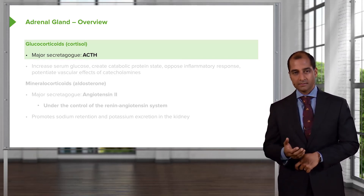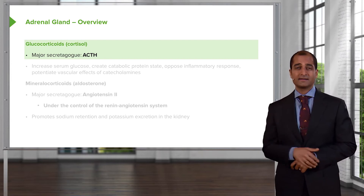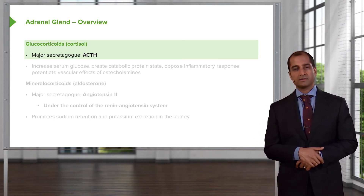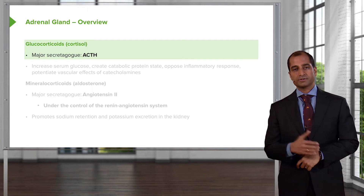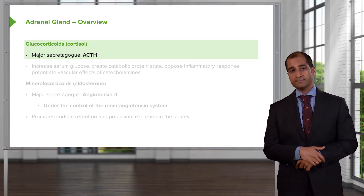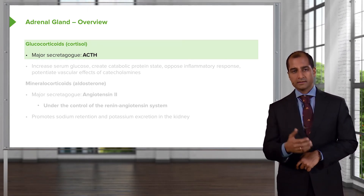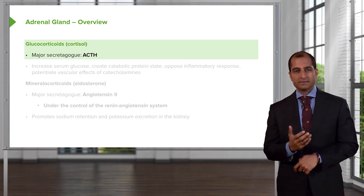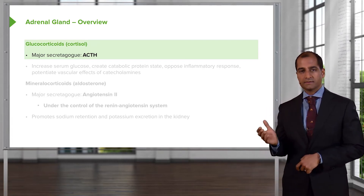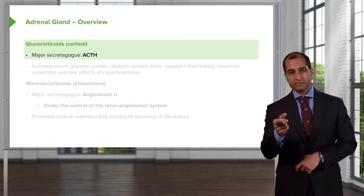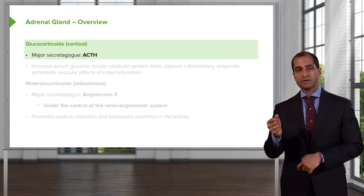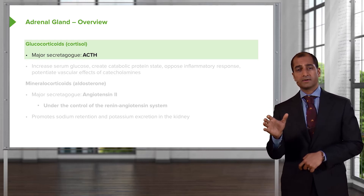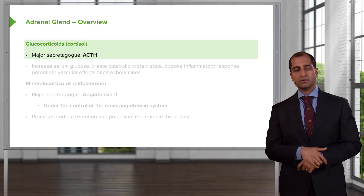Cortisol, prednisone — big time used in many conditions. For example, you might use it for immunosuppression on purpose, especially if you have a renal transplant or organ transplant recipient. Prednisone can be used for pain. The uses of it are extensive. Even plastic surgeons will use forms of cortisol to delay wound healing. Glucocorticoids are all over the place.